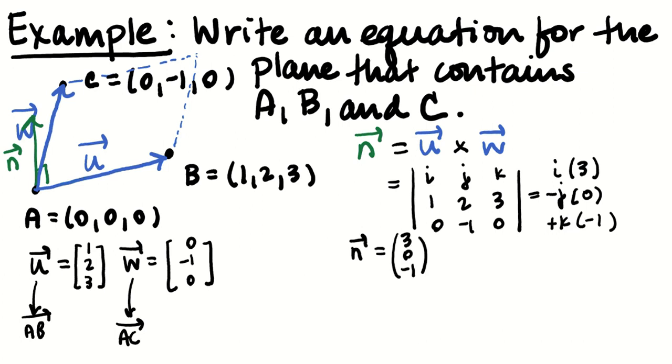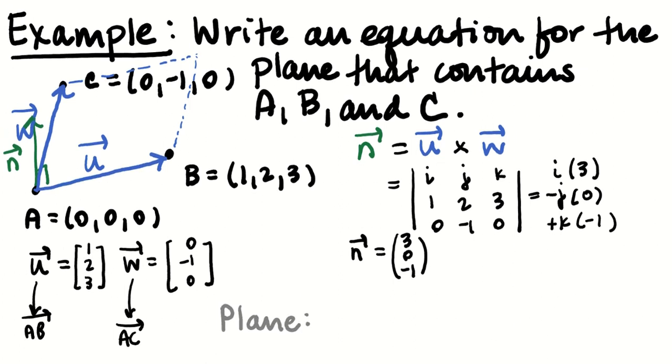Also means that, oh, I've got three points to choose from. You would probably want to choose the origin just to make it the easiest. That would be 3X minus Z equals 0. But maybe I'll just choose a different one to make it more exciting. I'll use the 1, 2, 3. So the equation of the plane. What's the X coordinate of the normal vector? 3. So it's 3 times X minus 1, plus 0 times Y minus 2, minus 1 times Z minus 3, equals 0. And that's how we write the equation for a plane, given just three points.